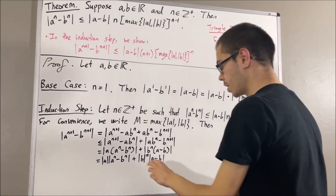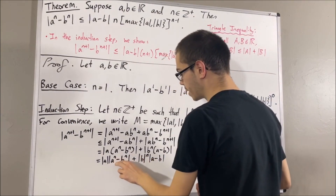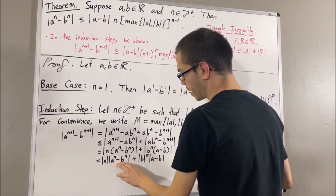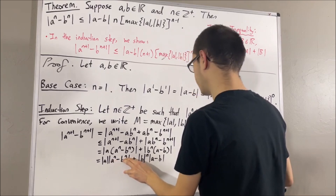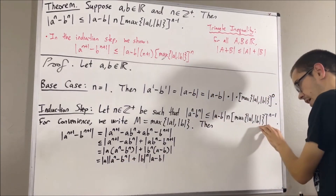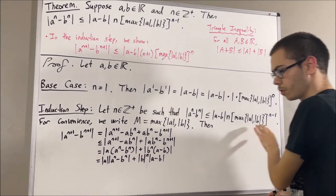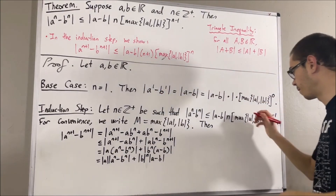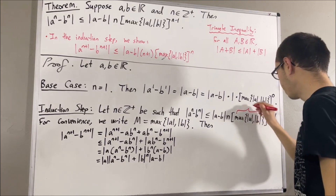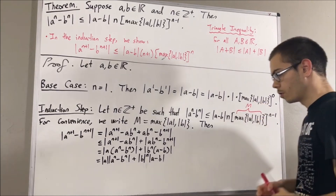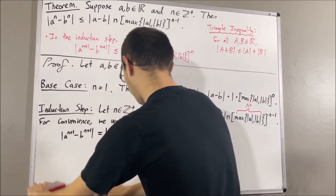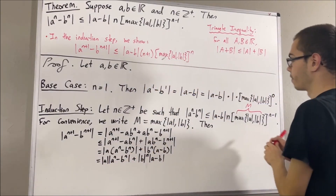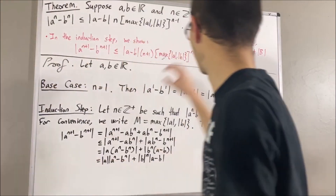At this point, since we have the absolute value of a to the n minus b to the n, we know by the induction hypothesis that the absolute value of a to the n minus b to the n is less than or equal to that expression. Remember that the maximum of absolute value of a and absolute value of b is capital M, so we have that the absolute value of a to the n minus b to the n is less than or equal to this quantity.